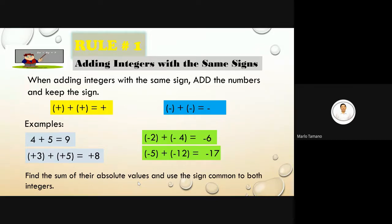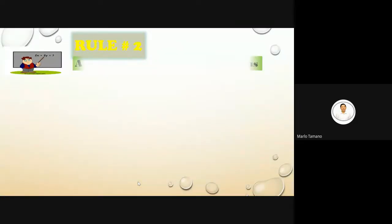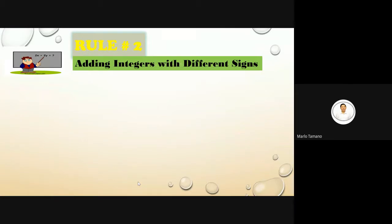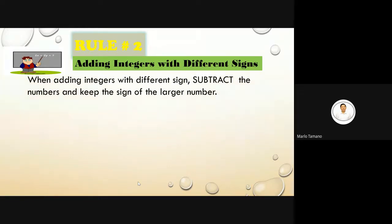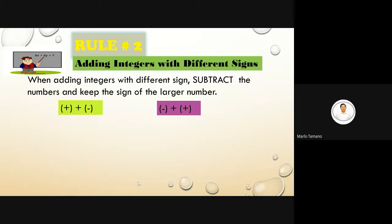Rule number two: adding integers with different signs. When adding integers with different signs, subtract the numbers and keep the sign of the larger number. Find the difference of their absolute values and use the sign of the integer with the greater absolute value. The result depends on which addend is greater.